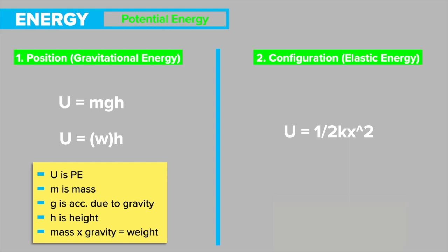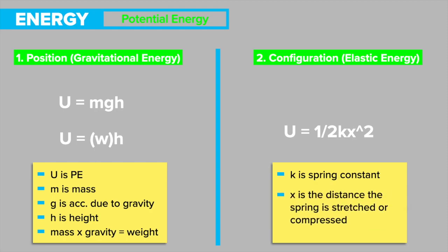In formula two, k is the spring constant and x is the distance the spring is stretched. When potential energy is released and causes motion, it is changed to kinetic energy.